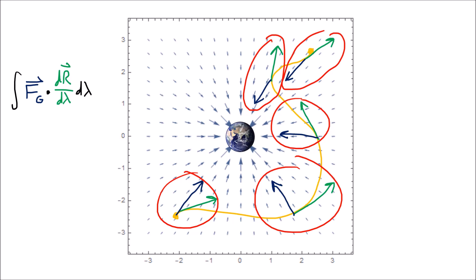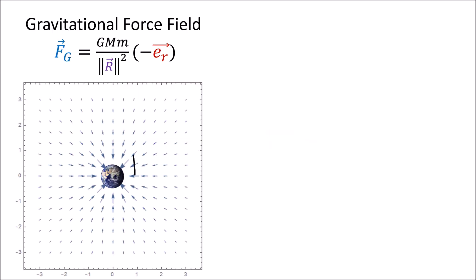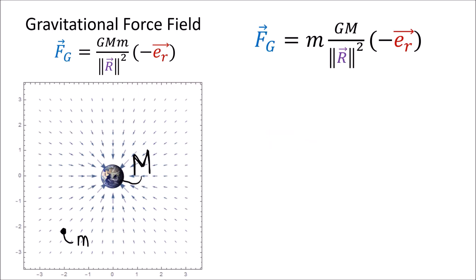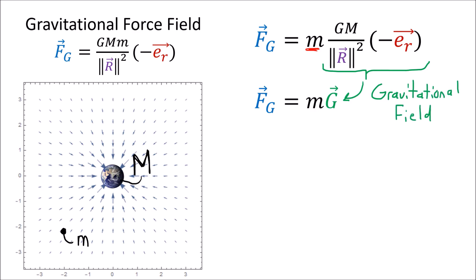Fortunately there's a new and better way to visualize the gravitational force that makes this fact — that work only depends on the endpoints — completely obvious. To talk about this, I need to introduce gravitational potential. Often when physicists talk about forces they take one of the masses out and call the remaining term the gravitational field, which becomes a force when it acts on a mass. This gravitational field is a vector field that can be written as the negative gradient of a scalar field phi, called the gravitational potential.